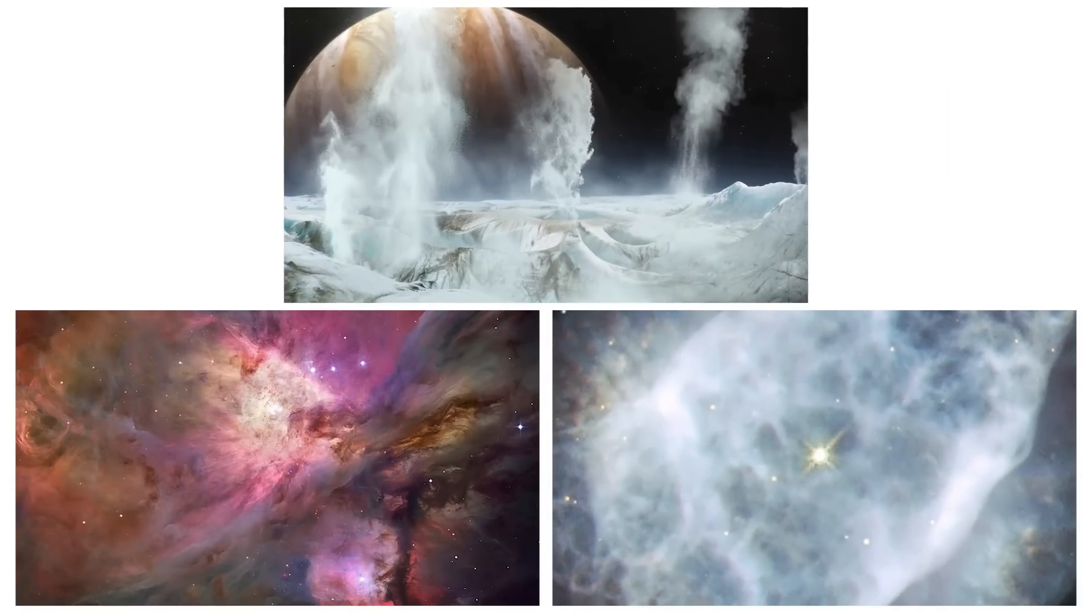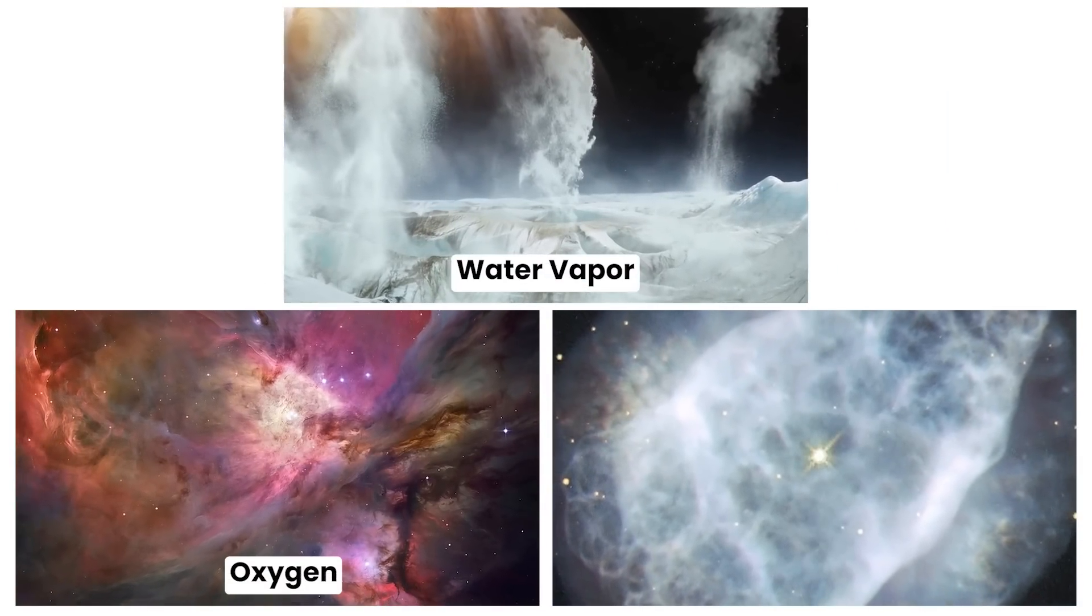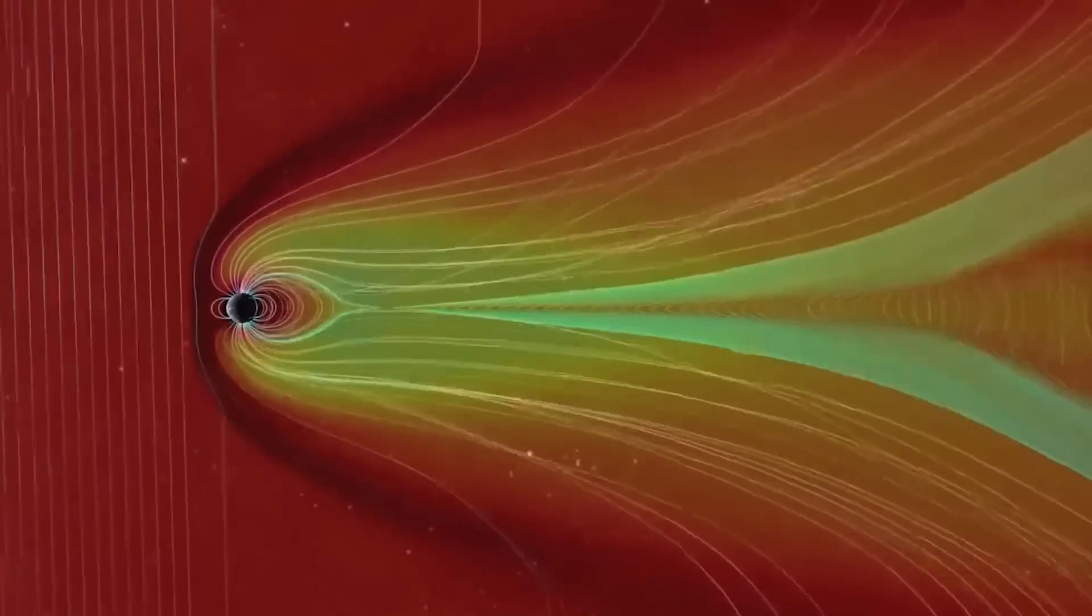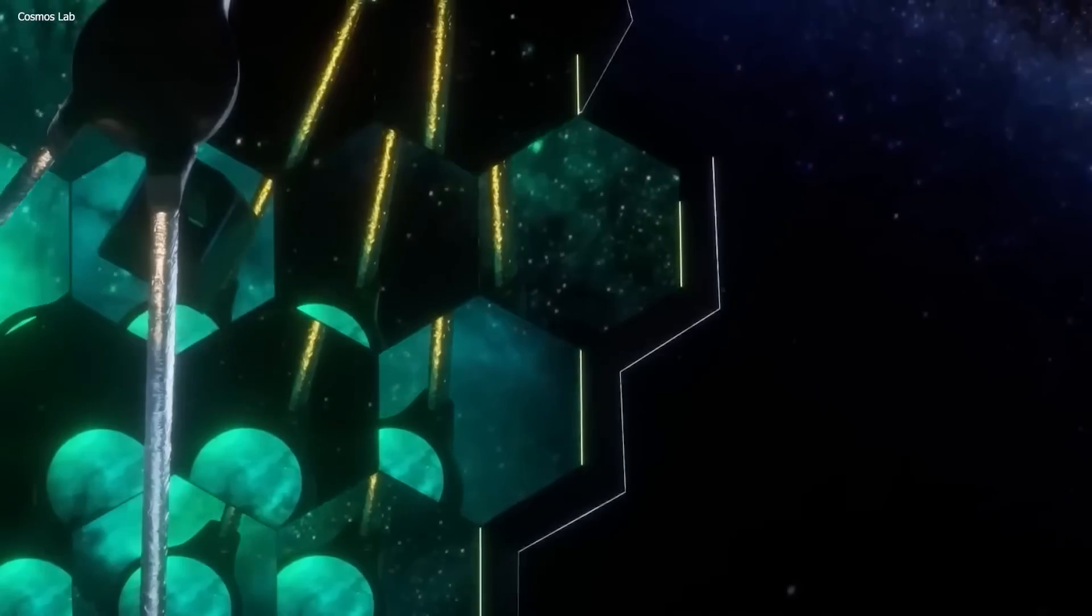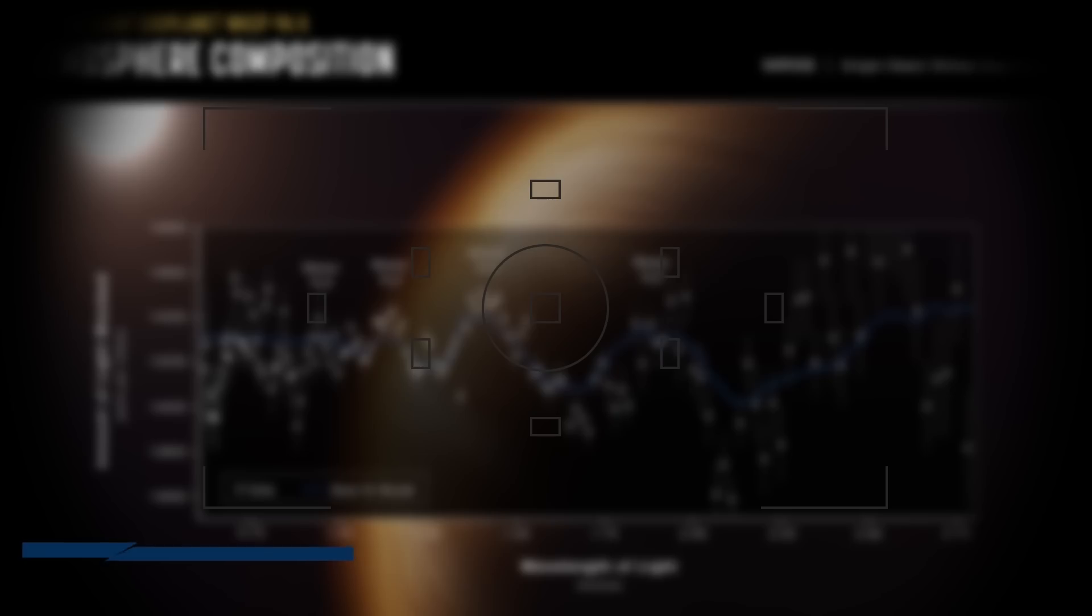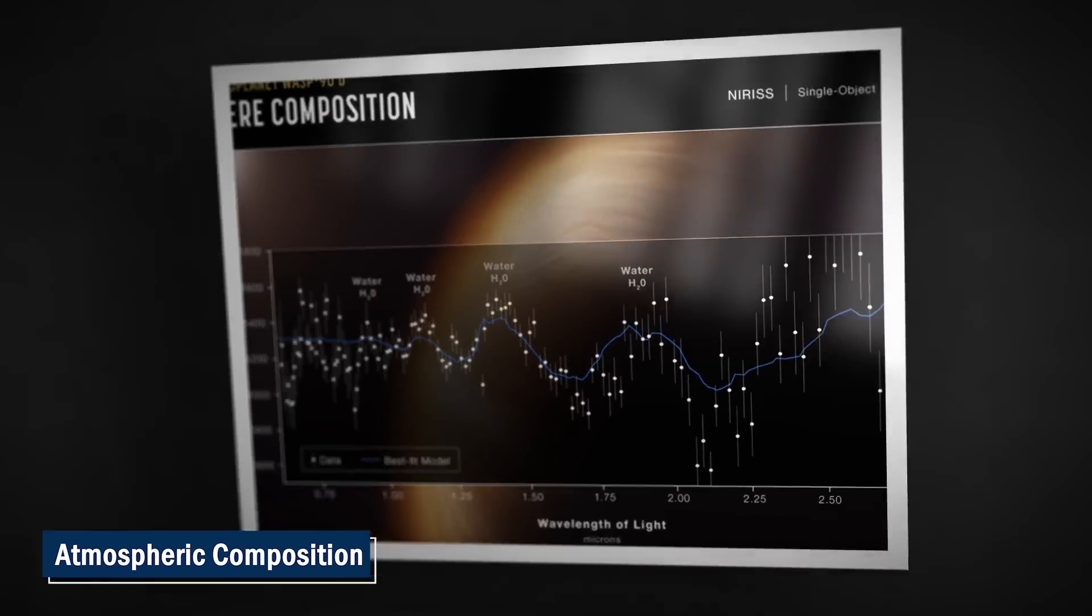They look for specific gases like water vapor, oxygen, and nitrogen. When light shines through these gases, some wavelengths are absorbed while others pass through. The JWST is incredibly sensitive, allowing scientists to deduce the atmospheric composition based on these observations.